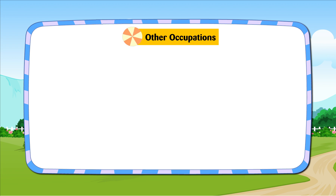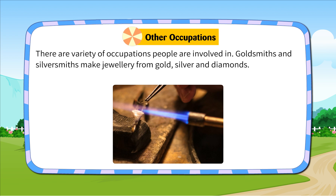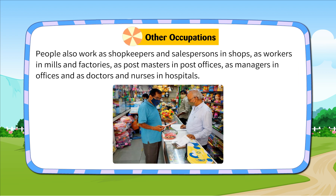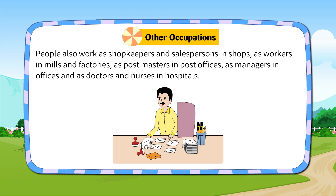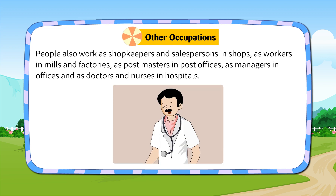Other occupations. There are a variety of occupations people are involved in. Goldsmiths and silversmiths make jewellery from gold, silver and diamonds. People also work as shopkeepers and salespersons in shops, as workers in mills and factories, as postmasters in post offices, as managers in offices and as doctors and nurses in hospitals.